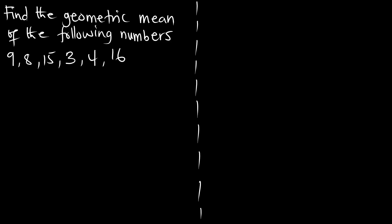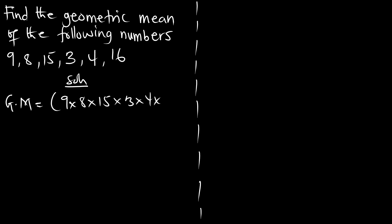Find the geometric mean of the following numbers: 9, 8, 15, 34, and 16. Using the first formula, GM equals 9 × 8 × 15 × 34 × 16, raised to the power 1 over 5 — we have 5 values, so n equals 5. The geometric mean is 14.69. This is the geometric mean using the simple formula.